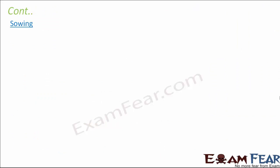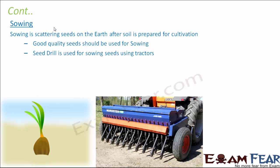Sowing is done once soil preparation is complete — seeds are scattered on the prepared soil. It is essential to use only good quality seeds because poor quality seeds will reduce crop productivity. Instead of doing it manually, which consumes a lot of time and labor, a machine called a seed drill is often used. The seed drill sows seeds uniformly and faster with no human labor, and is attached to a tractor.